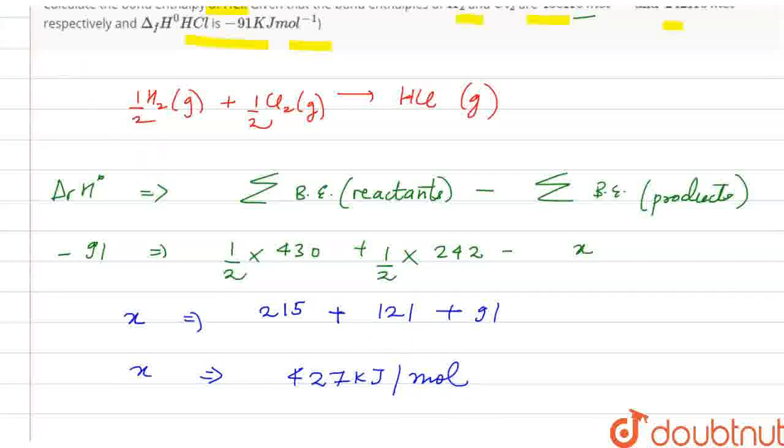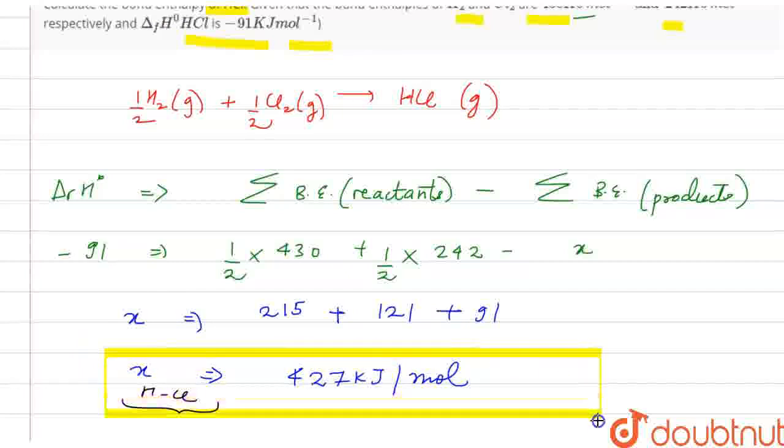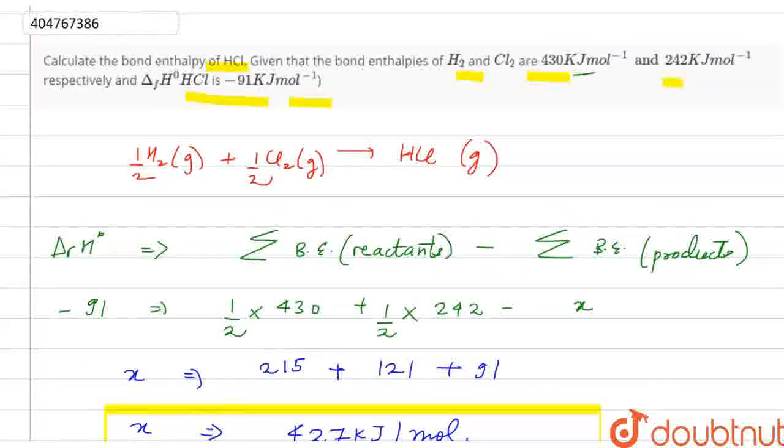And this is what is our bond enthalpy for the HCl bond. This is for the HCl bond, and this is our question. So this answer will be 427 kJ per mole. Thank you.